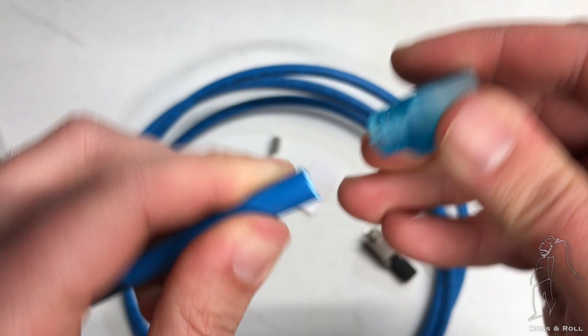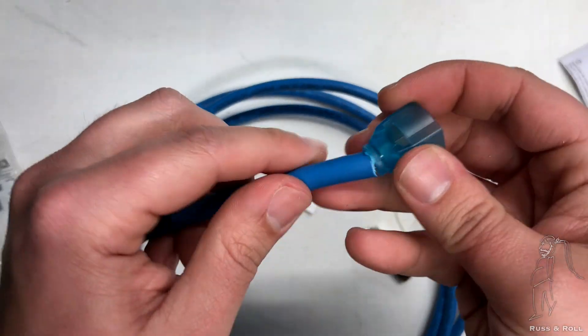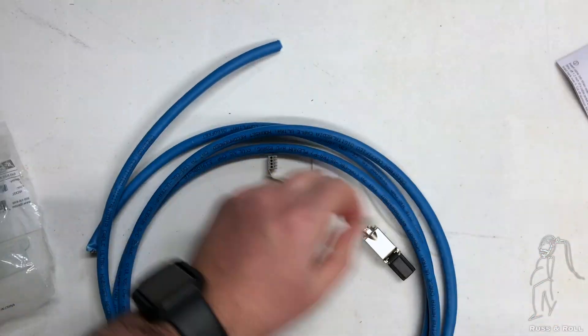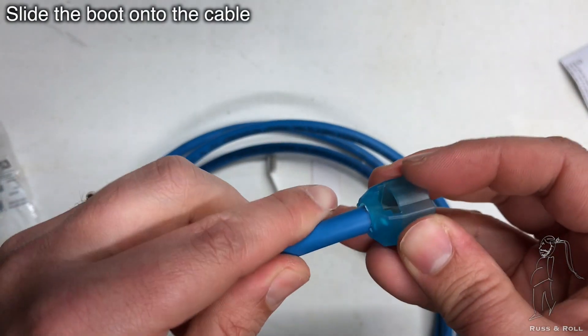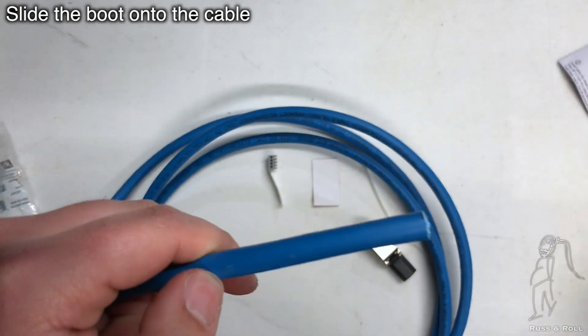And it looks like that doesn't fit, so let me cut a little bit more off. Remember, start small. Take off a little bit and then a little bit more until you get down to the size that you want, so you don't end up too short. Once the boot fits on the cable, slide it on and slide it down out of your way because we're going to strip the outer jacket off.